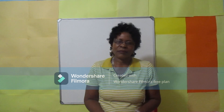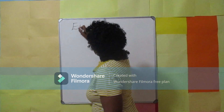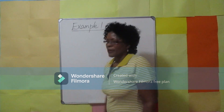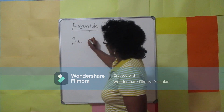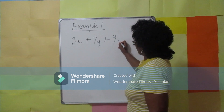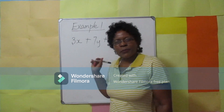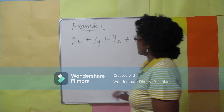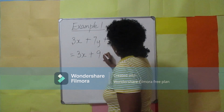Let's get into it. In Example 1, we have the following expression: 3x plus 7y plus 9x plus 8y. In the expression, let's identify like terms. 3x plus 9x.